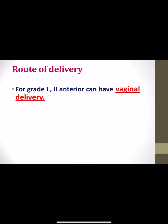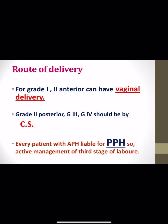The route of delivery: for type 1 and type 2 anterior placenta previa, vaginal delivery may be attempted. For type 2 posterior and types 3 and 4, delivery should be by cesarean section. Every patient with antepartum hemorrhage is liable for postpartum hemorrhage, so active management of the third stage of labor is essential.